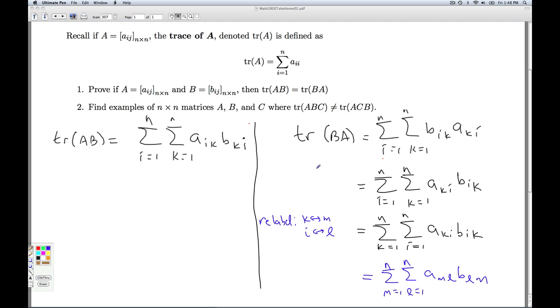How can I get this to look like that? Well, I can relabel the I to be M and the K to be L. So now this is the sum of M equals 1 to N, the sum L equals 1 to N, A_ML, B_LM.